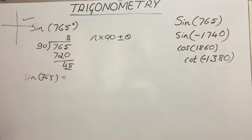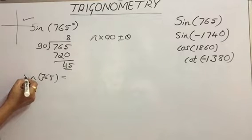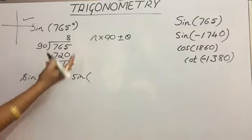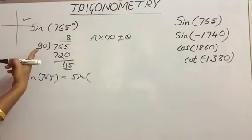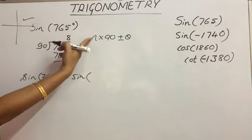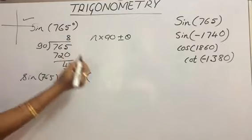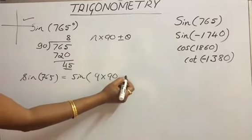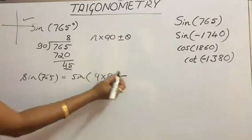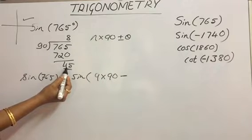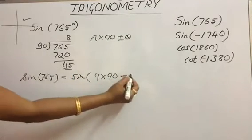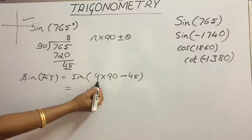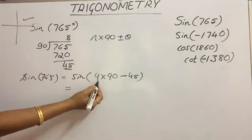Now let's get the value of sine 765° with the minus representation. Write sine 765 equal to sine of n×90. In the division, we got 8 as the quotient. While writing n×90, increase the quotient by 1. So this becomes 9×90 − θ. While writing θ, we write the complementary part of the remainder. The remainder is 45, so the complementary part is 45 only. Now n is 9, which is odd.